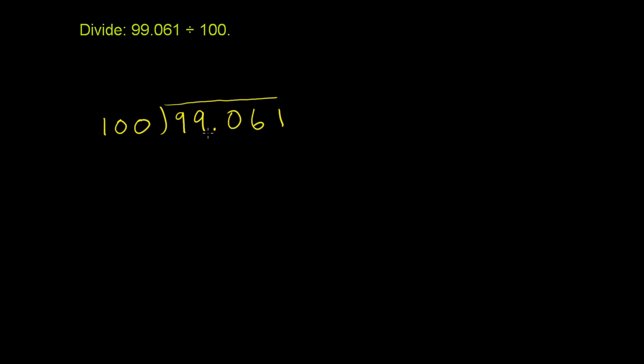But the first thing we want to do, just to make sure we don't make any mistakes, is make sure we put the decimal in the right place. So the decimal is going to sit right over here. This is where it was sitting before, so this is where it will sit in our quotient. And now we are ready to divide.